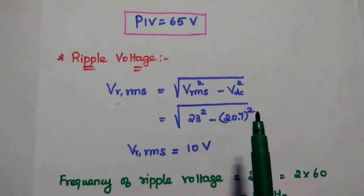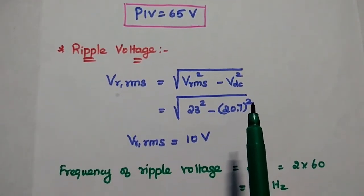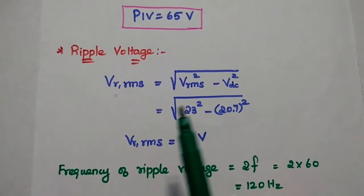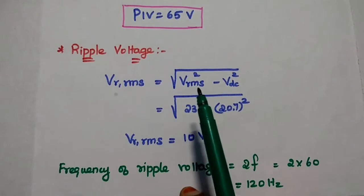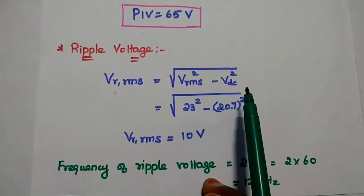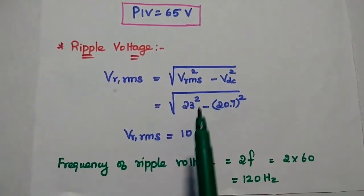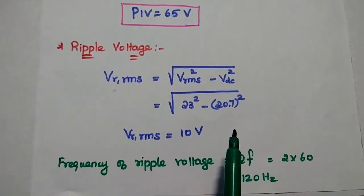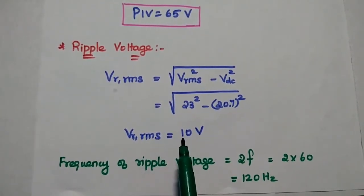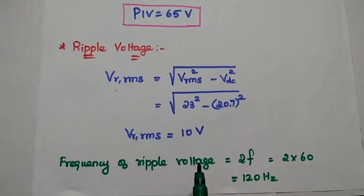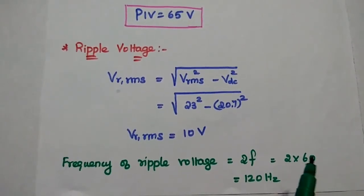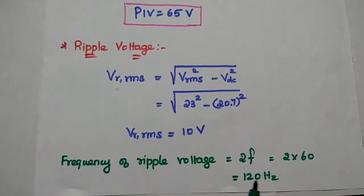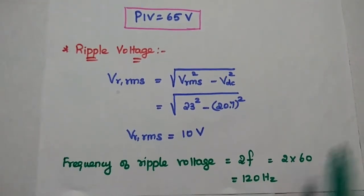Ripple means the unwanted AC content in the DC output. We get the ripple voltage using the formula √(Vrms² − Vdc²), substituting the values to get a ripple voltage of 10 V. The frequency of the ripple is 2 × the given frequency: 2 × 60 Hz = 120 Hz.